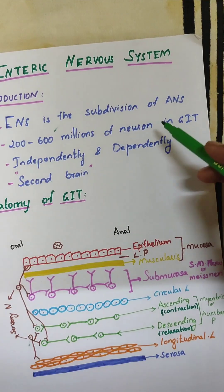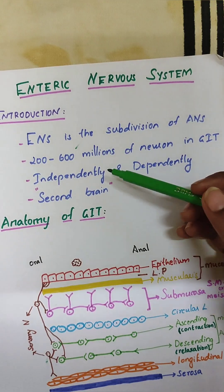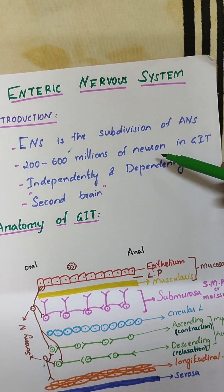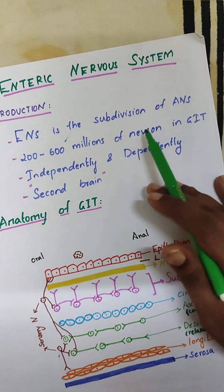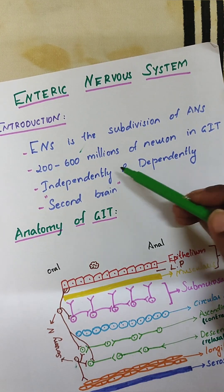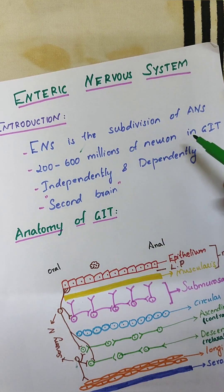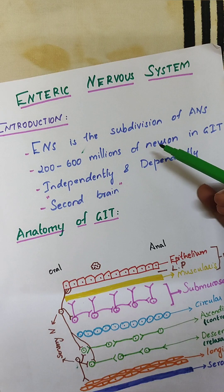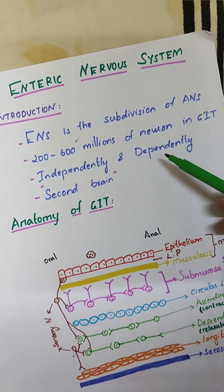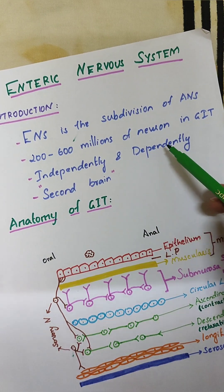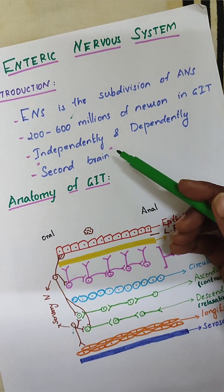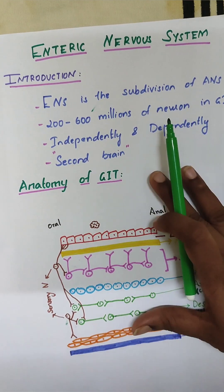The enteric nervous system is the subdivision of the autonomic nervous system and it consists of 200 to 600 million neurons which are present in the GIT. It is stated that the enteric nervous system has more neurons than the whole spinal cord. It can work independently and also depending upon the sympathetic and parasympathetic nervous system. It is also known as the second brain.